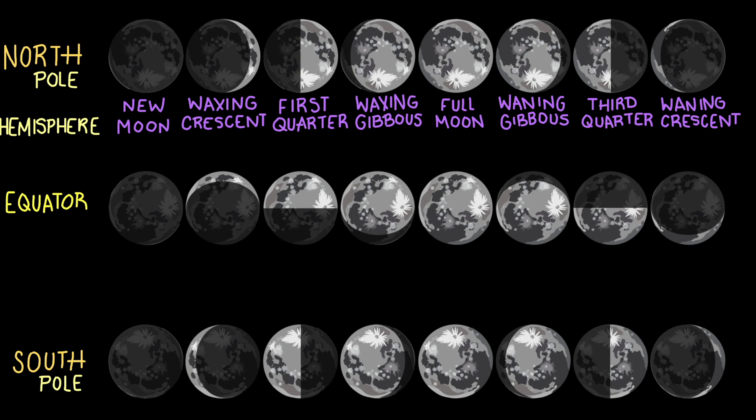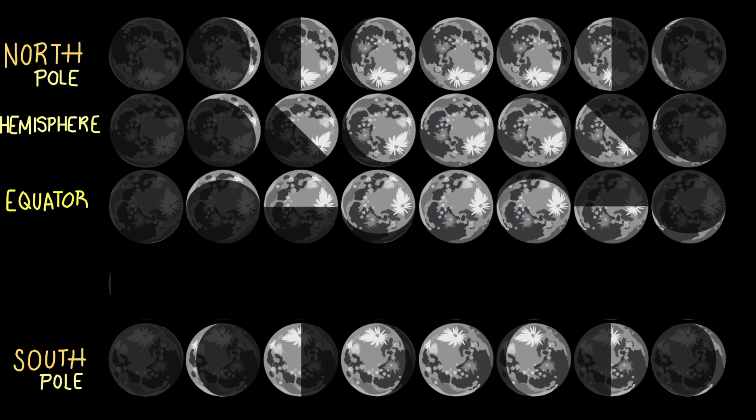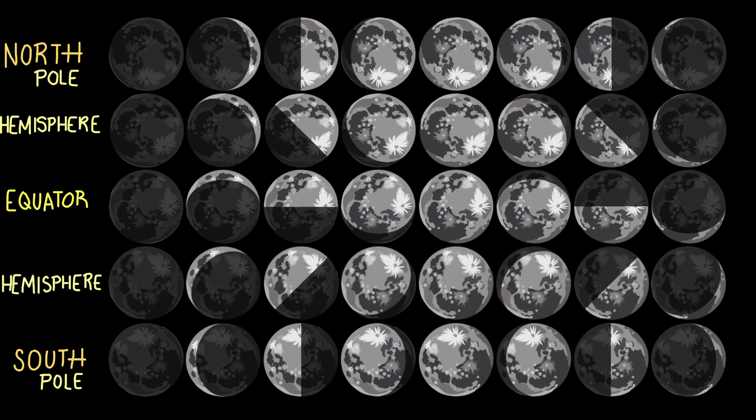But most people live somewhere in between the poles and the equator. So in the northern hemisphere, you are more likely to see something that looks like this. And in the southern hemisphere, you are more likely to see something that looks like this. The closer you are to the poles, the more upright your moon phases will appear.